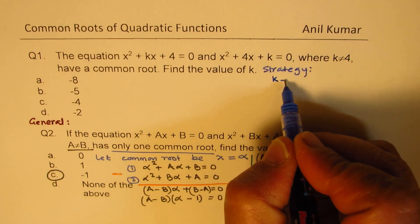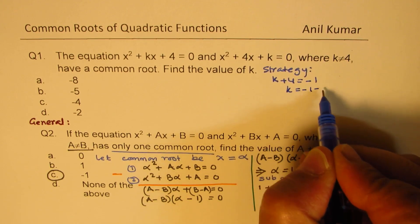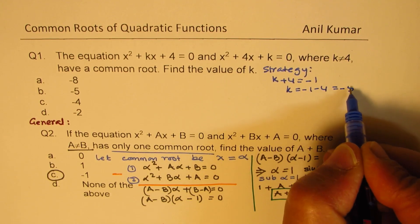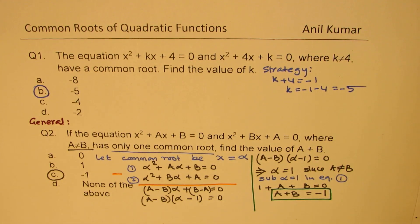So strategy says that k + 4 should be -1 or k will be -1 - 4, that is -5. And so option b is the correct option. Do you see that? So within a few seconds, you can answer such a question.